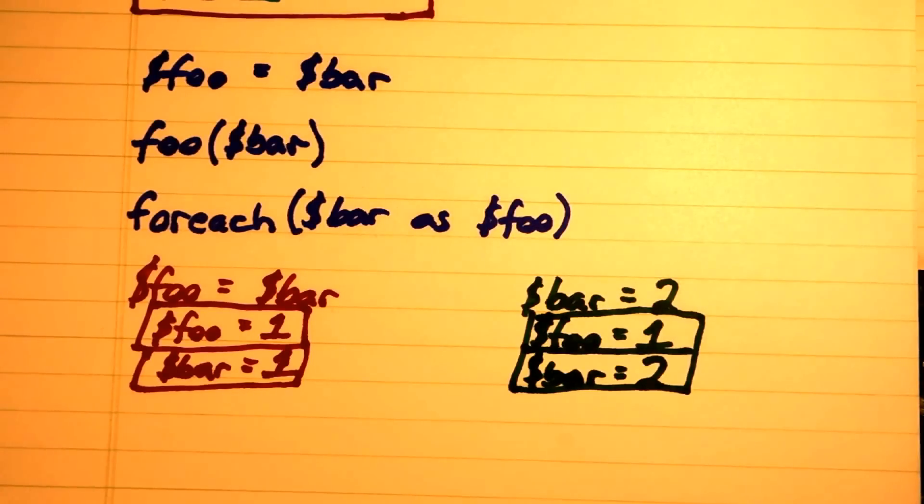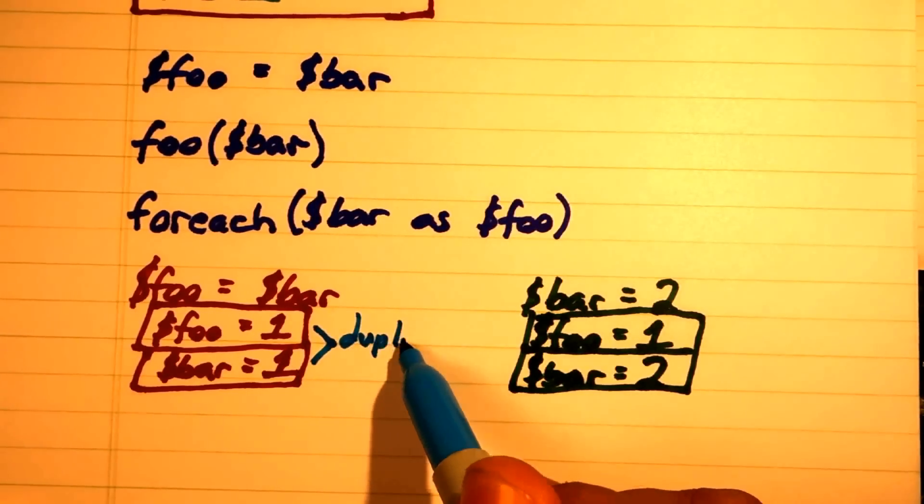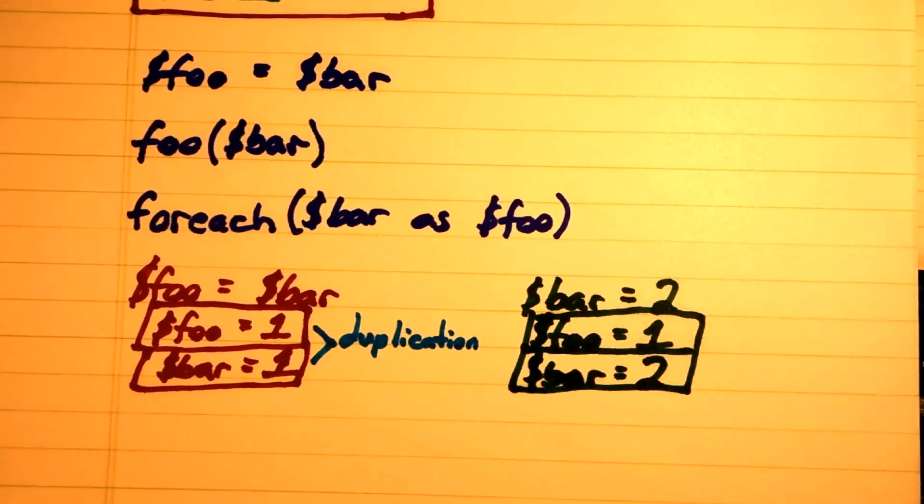But this has some problems with it. Every time we copy a variable, we need to duplicate the contained value as well. This can lead to severe memory duplication, which can result in some major performance issues.